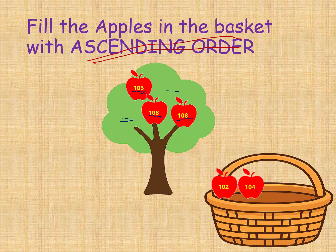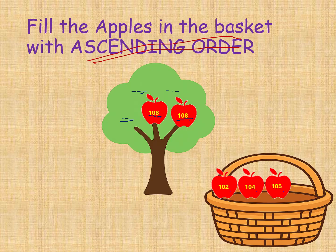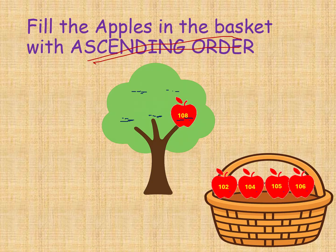Next, from 105, 106, and 108, the smallest is 105. Then from 106 and 108, the next smallest is 106. Six is the smallest. And the last apple is 108. So this is the small to largest order — ascending order.